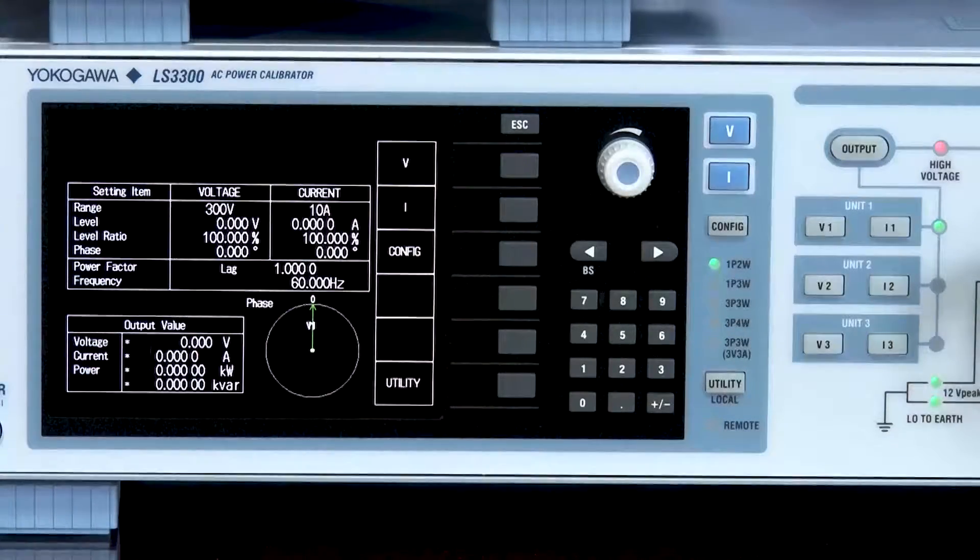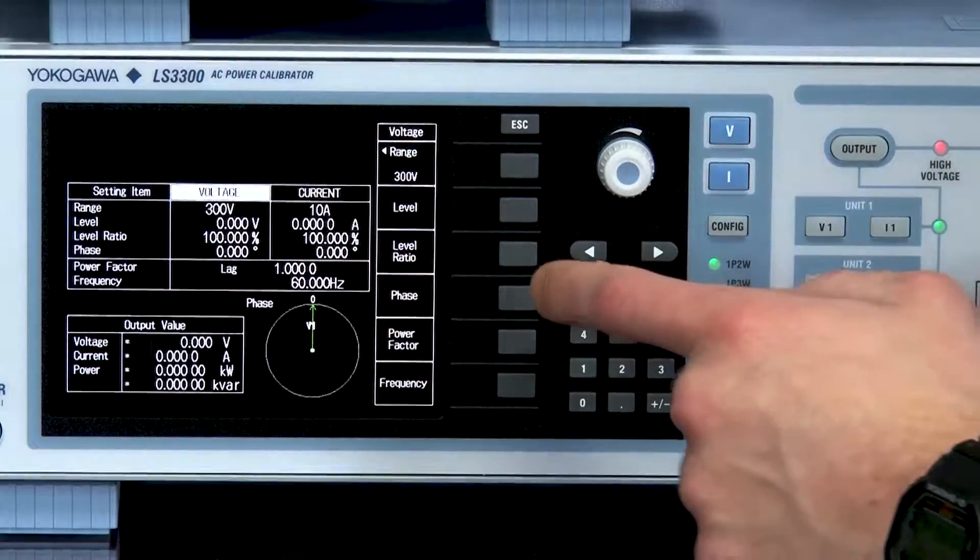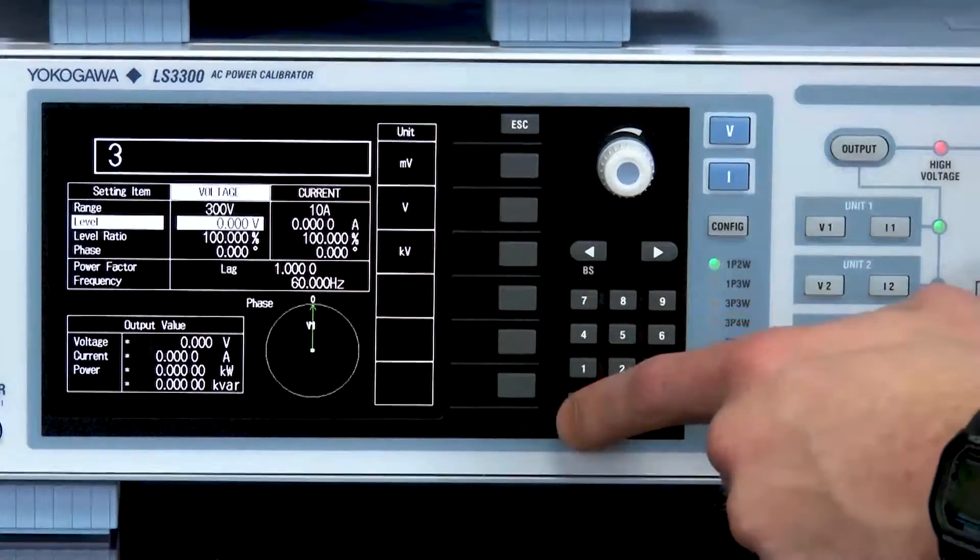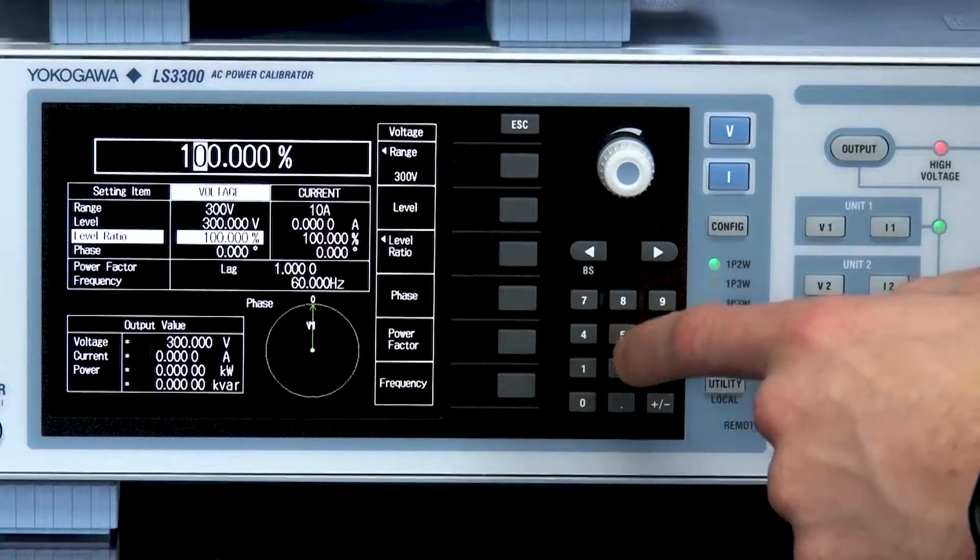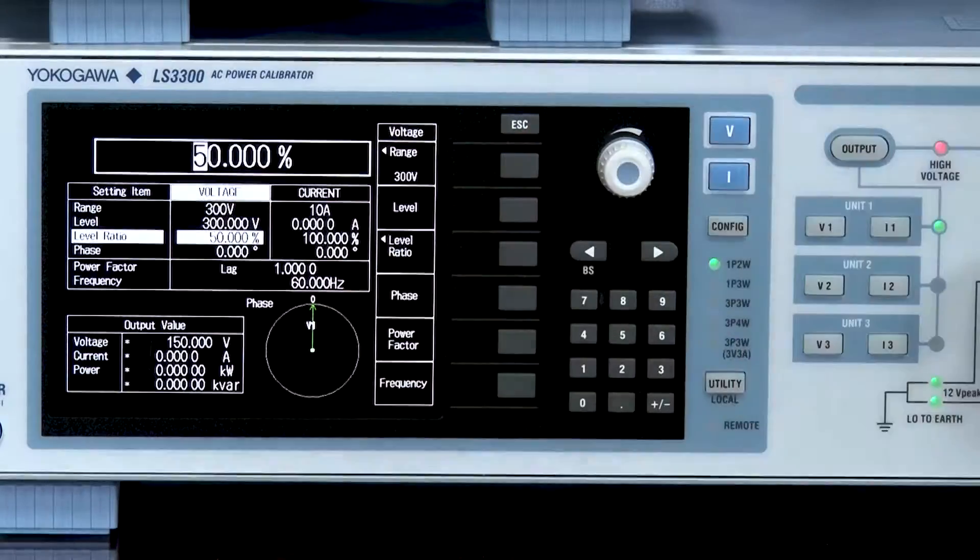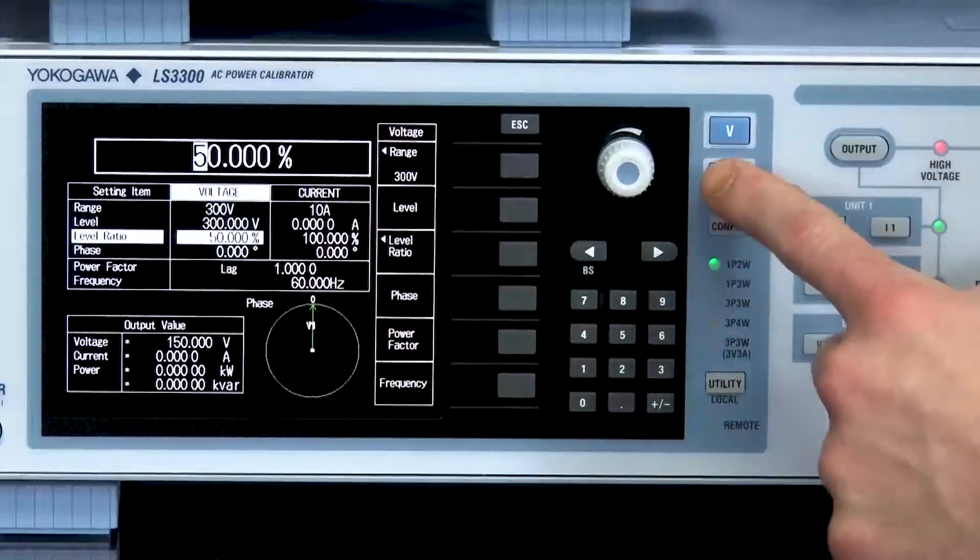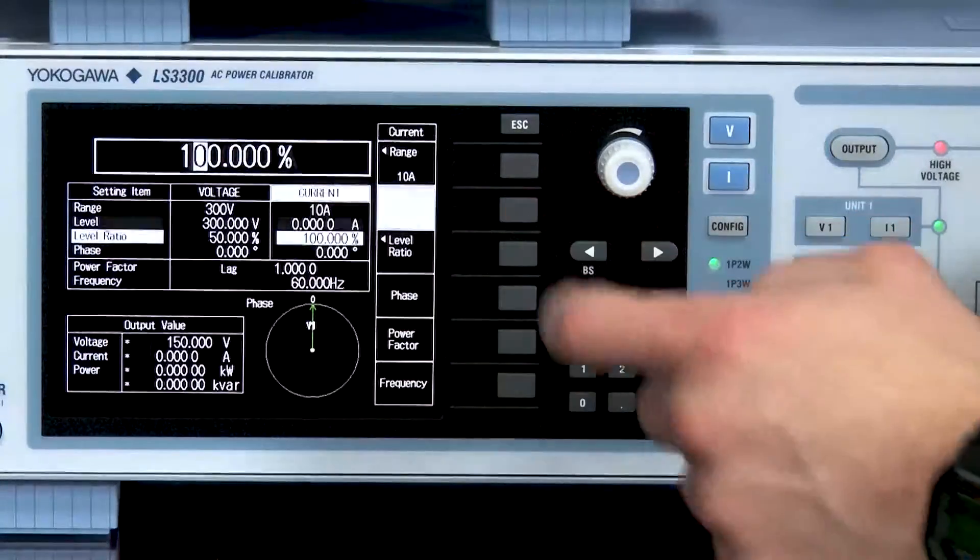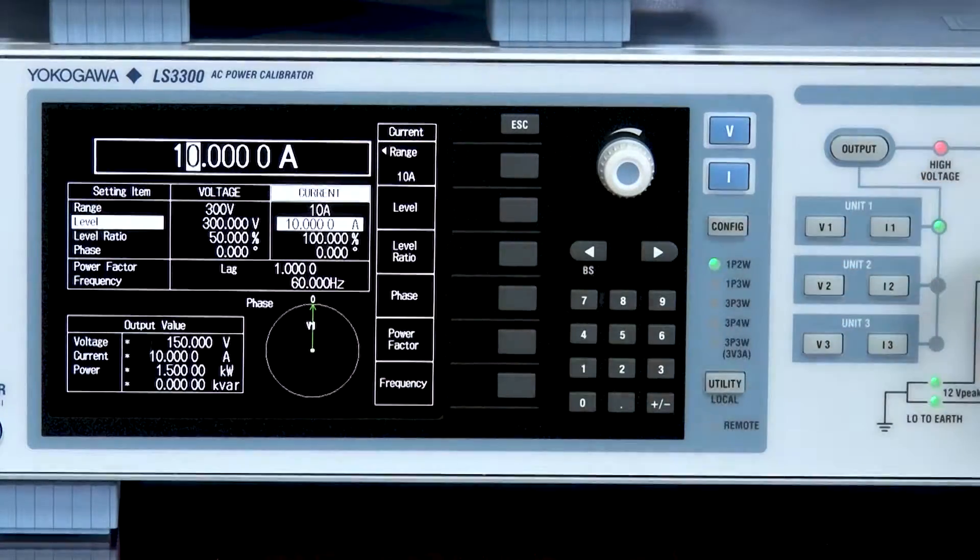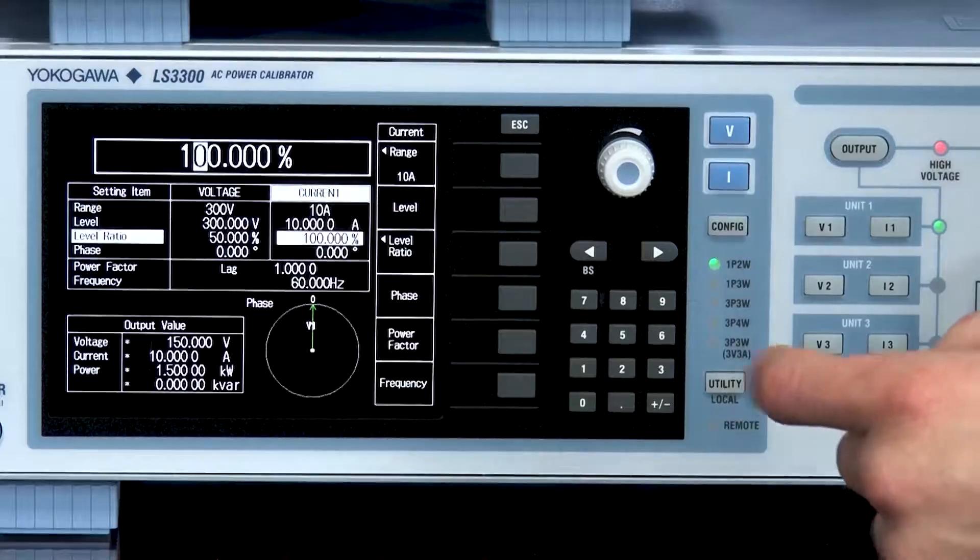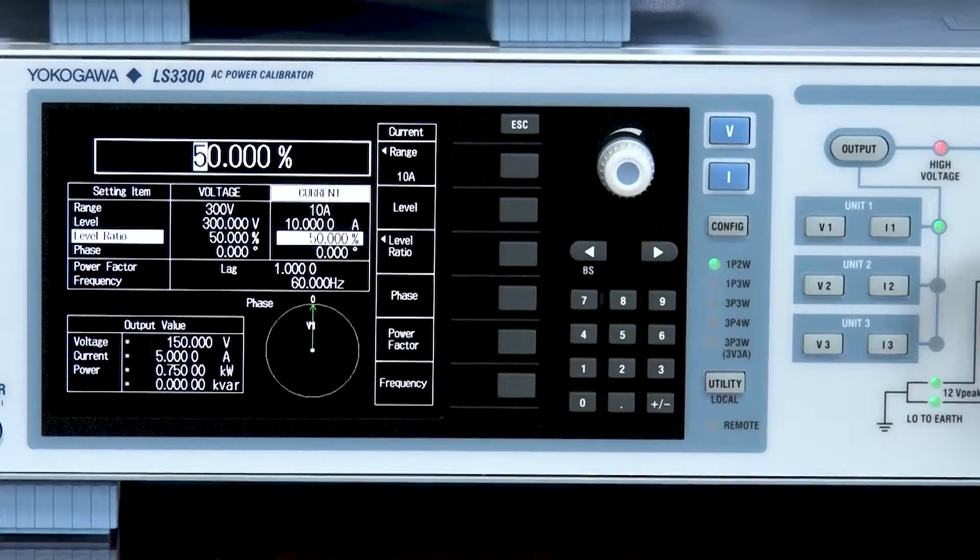To begin the test I will set the output level of voltage to 300 volts by selecting the voltage key and entering in 300 volts under the level option. Next I will select the level ratio, enter in 50%, and click enter. This will provide me with an output of 150 volts. Next I will go into the current menu. I will set the level to 10 amps by going to level and entering in 10 amps. Next I will set the level ratio to 50% and enter, which will provide me an output of 5 amps.